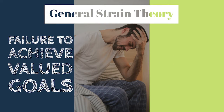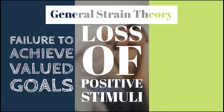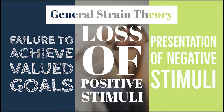According to Agnew, strain includes the failure to achieve positively valued goals like money, status, or respect and autonomy; the removal of positively valued stimuli, such as the loss of a valued possession, not getting a promotion, or going through a breakup; and the presentation of negatively valued stimuli, such as physical abuse, harassment at work, or homelessness.